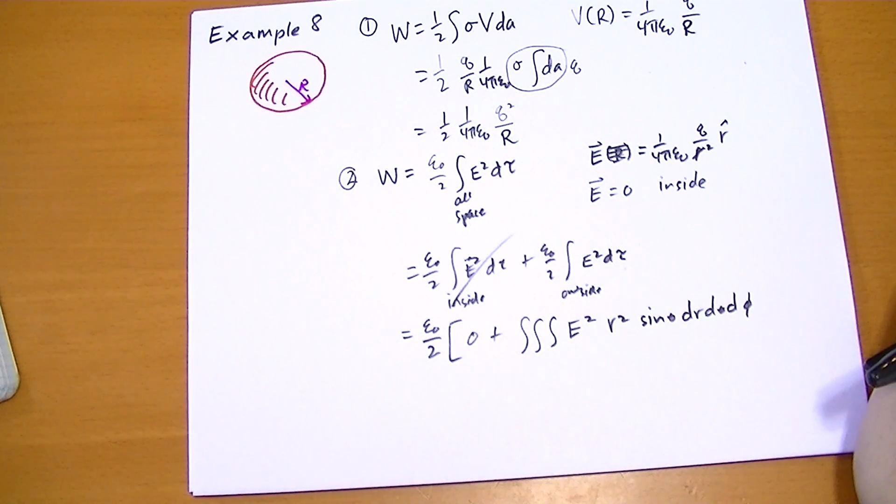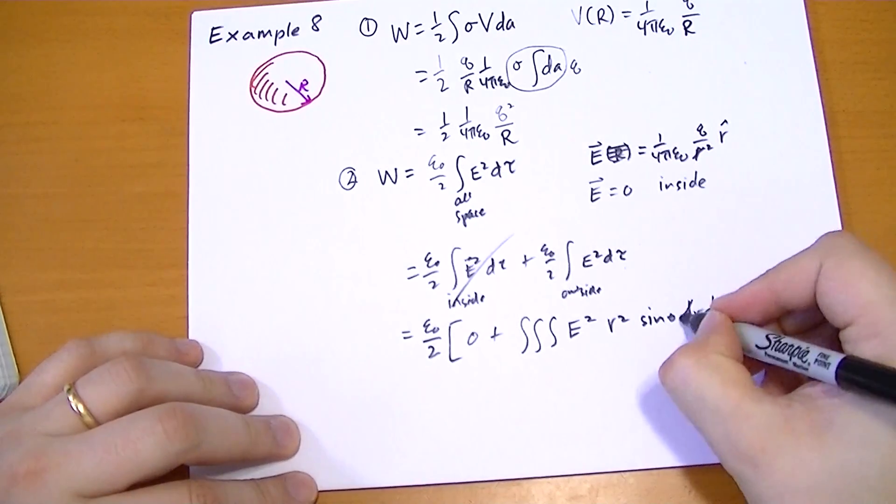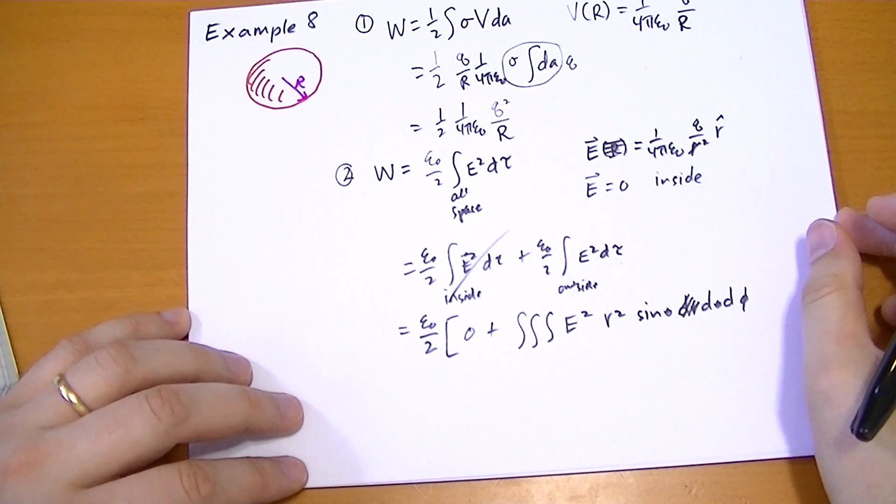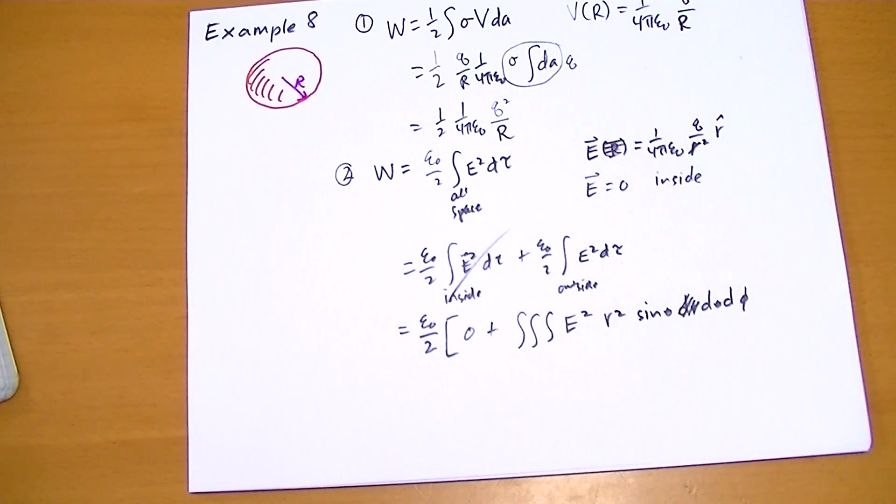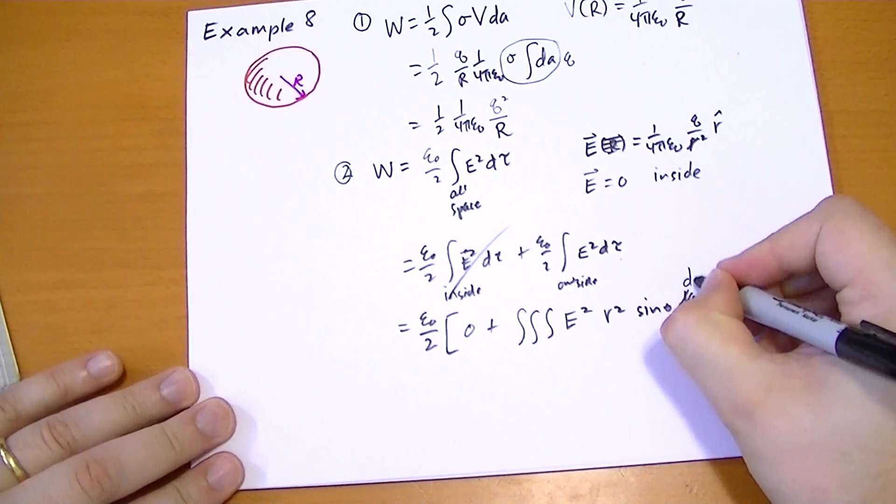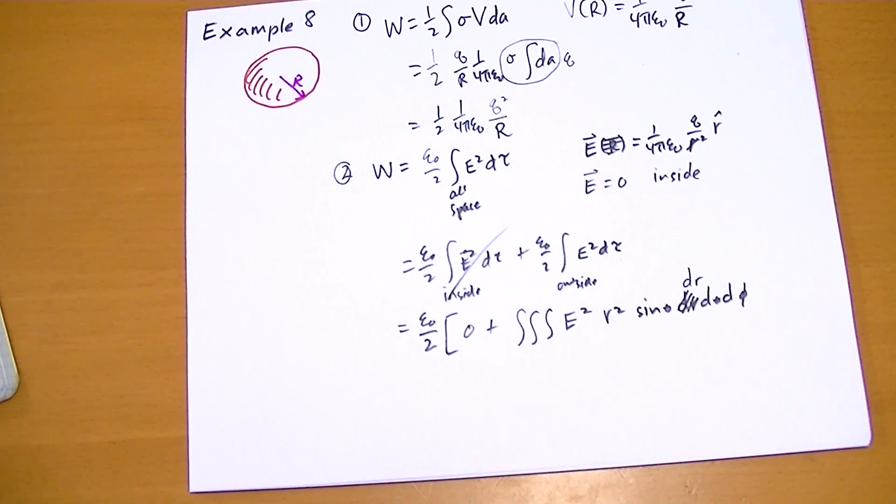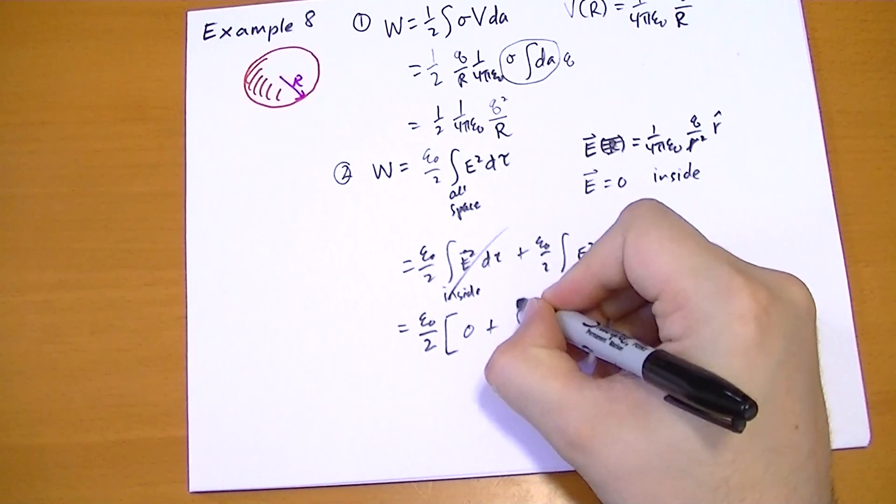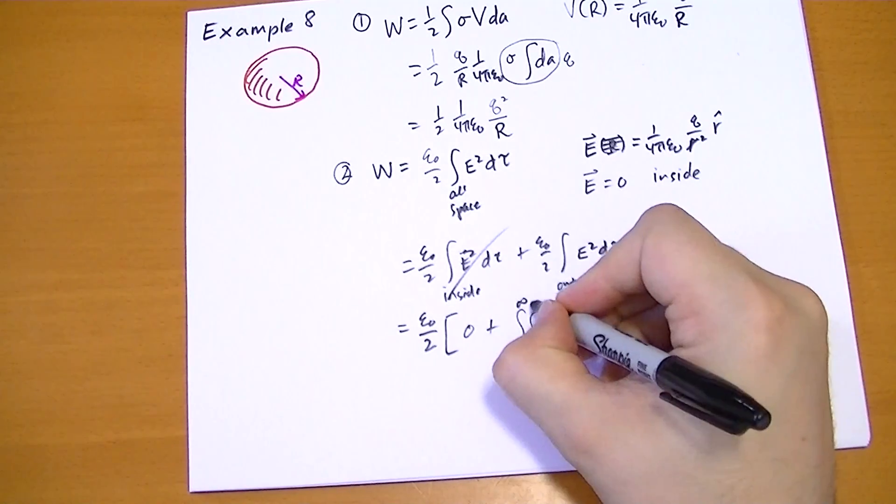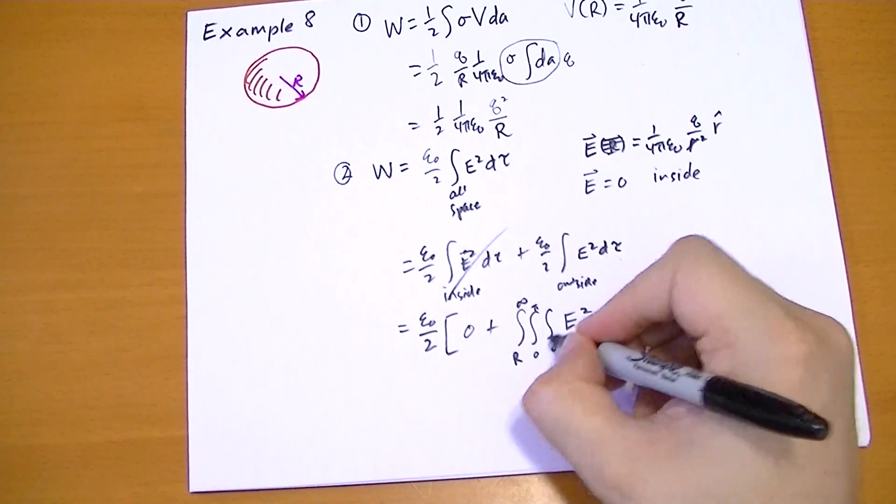Let me double check my notes here. R squared sine theta dr d theta d phi. I was right, my notes were wrong. And so we're going to go from the radius from the surface R there. We're going to go through theta of 0 to pi, and we're going to go through phi of 0 to 2 pi.